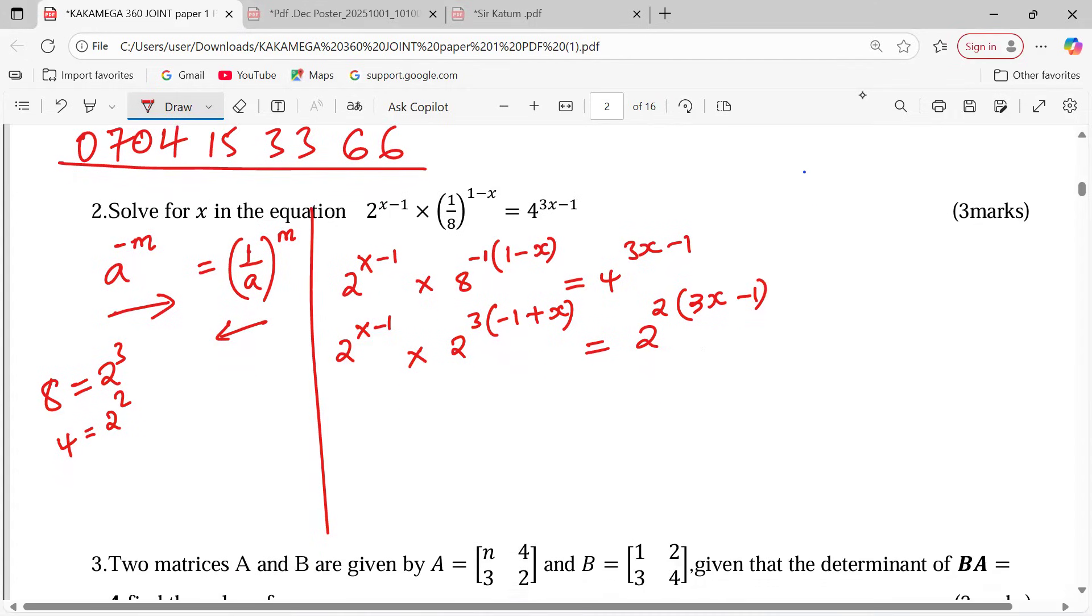With this, let's talk about the power law of indices, whereby you just have to multiply the powers. Whenever we have a power m, then everything is multiplied by n in the power, then you just take the product of m and n that way. Meaning that we can write this as 2 power x minus 1 multiplied by 2 raised to the power of negative 3 plus 3x equals to 2 6x minus 2 that way.